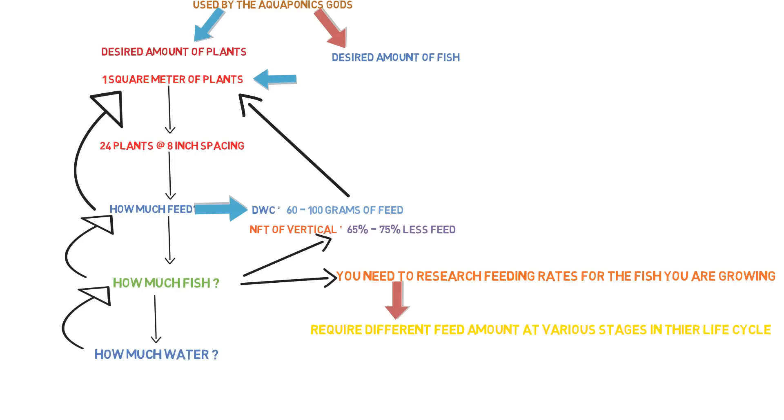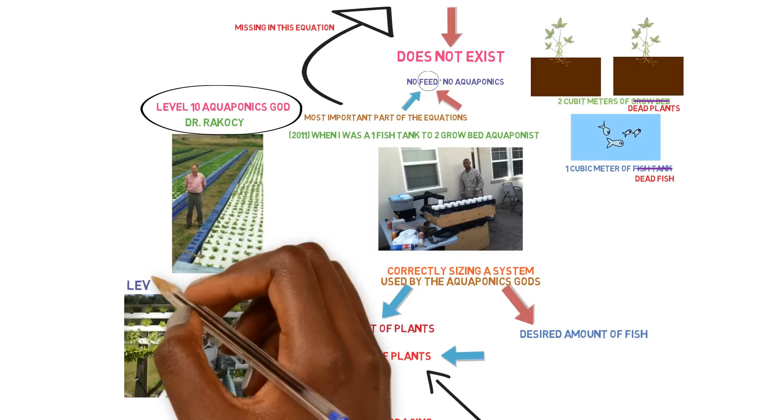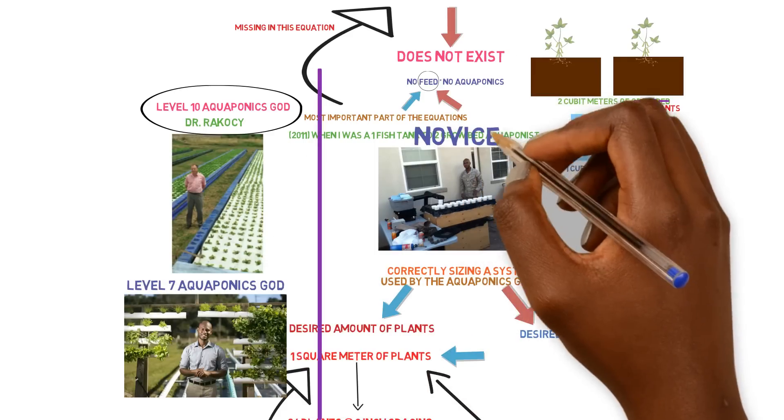That's how you work backwards and figure out the correct stocking ratios that you can come up with. And you can have a predictable amount of feed and input and output for your system. Things like this. Knowing formulas like this is what separates the aquaponic gods from the beginners.